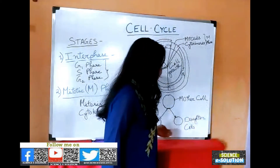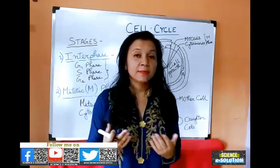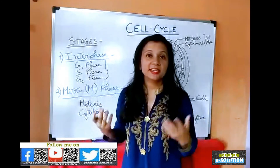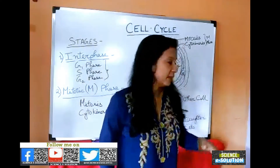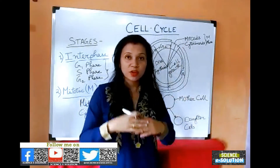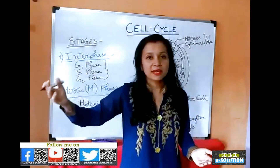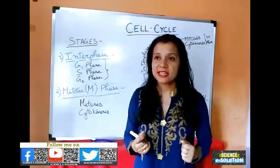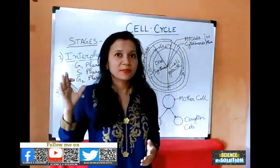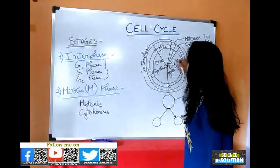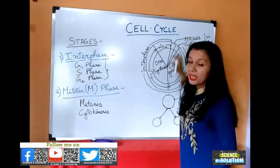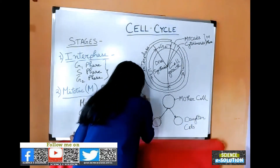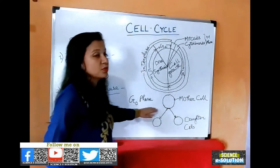Now, what happens to these two daughter cells? Their fate depends on what type of cells they are. If they are cells of an embryo or tumor cells, these cells divide repeatedly — mother cells form daughter cells, and daughter cells again act as mother cells to form more daughter cells. But most cells, after a certain number of divisions, stop dividing. What happens is they exit the G1 phase and enter a phase called the G0 phase.